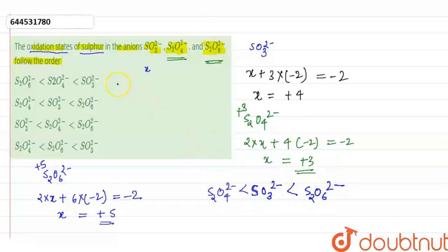Let's find out in the options. Here the correct option is the second option, and rest all options are incorrect. In this option, S₂O₆²⁻ has maximum oxidation state which is +5, in S₂O₄²⁻ it's +3, and in SO₃²⁻ it's +4. So this is the order and the correct option is the second option. Thank you.